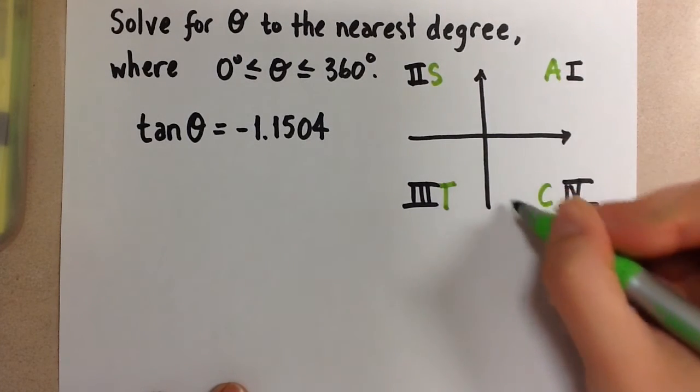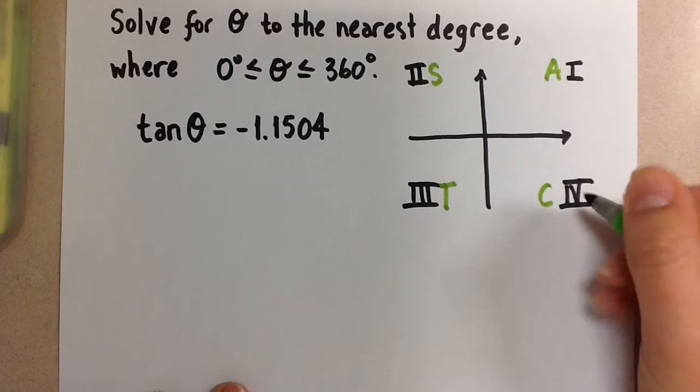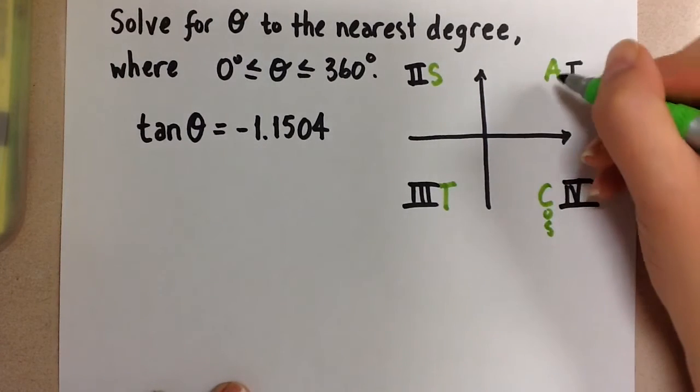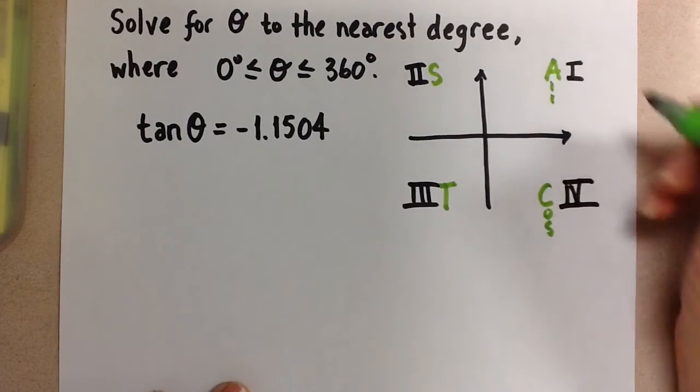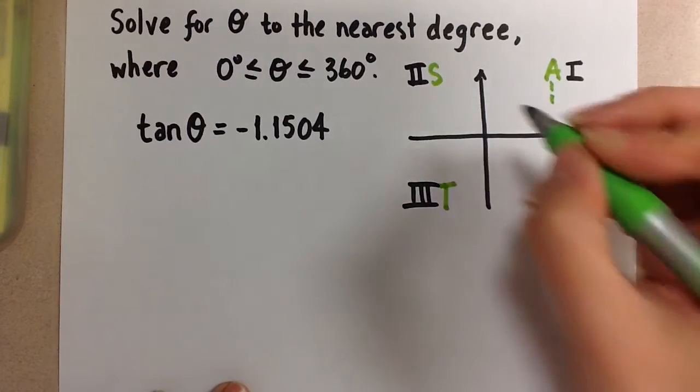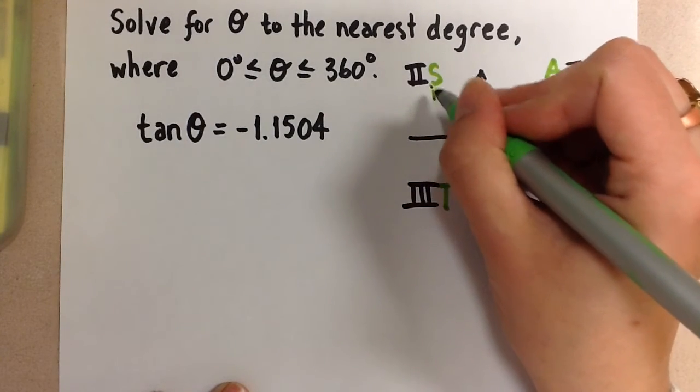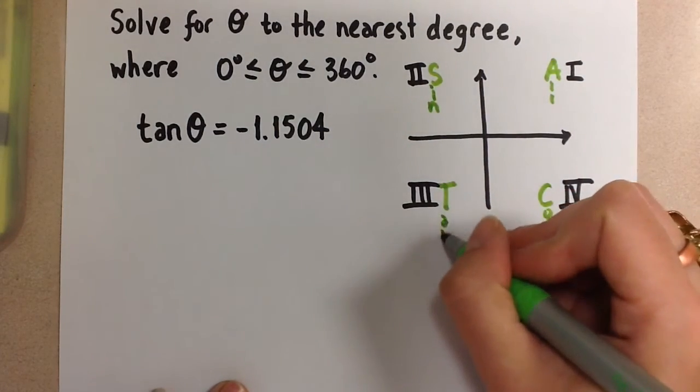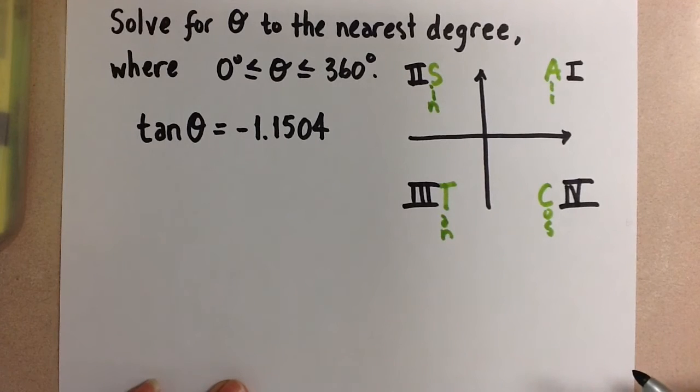This means that in the fourth quadrant, the cosine ratio will be positive. In the first quadrant, all of the ratios will be positive. In the second quadrant, the sine ratio will be positive. And in the third quadrant, the tangent ratio will be positive. So that's what our CAST rule says.